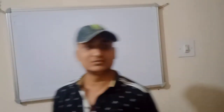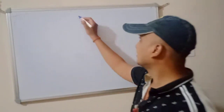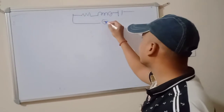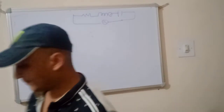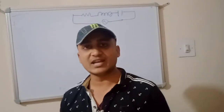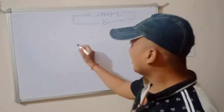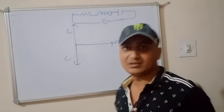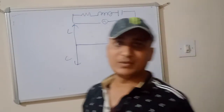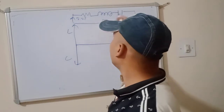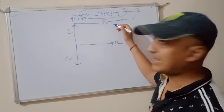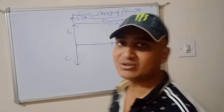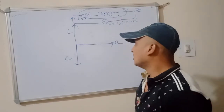Now we will discuss the case we have taken earlier. There will be a resistance, an inductor, and a capacitance, all connected to an AC source. Our super trick is the phasor diagram. Our main motive is to find the current in that circuit. To find the current we should know Z, because we know V equals V-naught sine omega-t, so we have to find the impedance of the circuit.